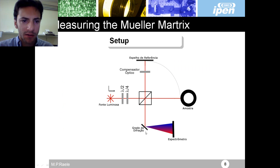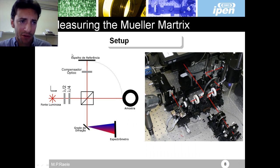This is a schematic view of my setup. Let me just translate. This is a reference mirror, optical compensator, light source, half wave plate and quarter wave plate, spectrometer and the sample.